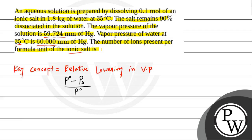So P° is the vapor pressure of pure solvent, which is 60 mm of Hg. We substitute: 60 minus 59.724 divided by 60, and this equals i into X_B. P° (vapor pressure of pure water) is 60 mm of Hg, and the vapor pressure of the solution at 35 degrees Celsius is 59.724 mm of Hg.